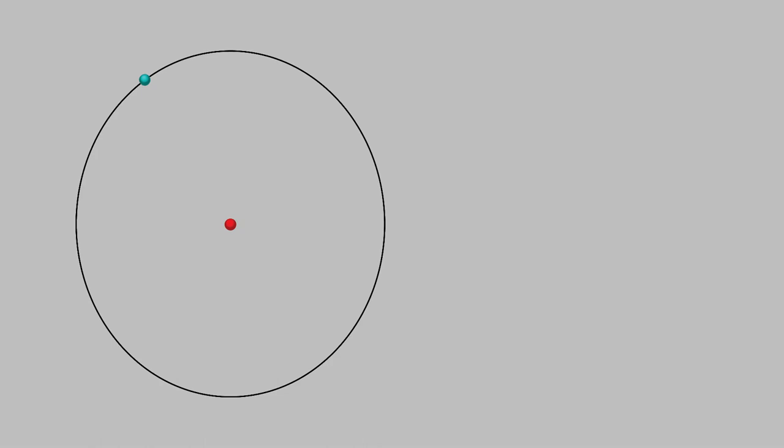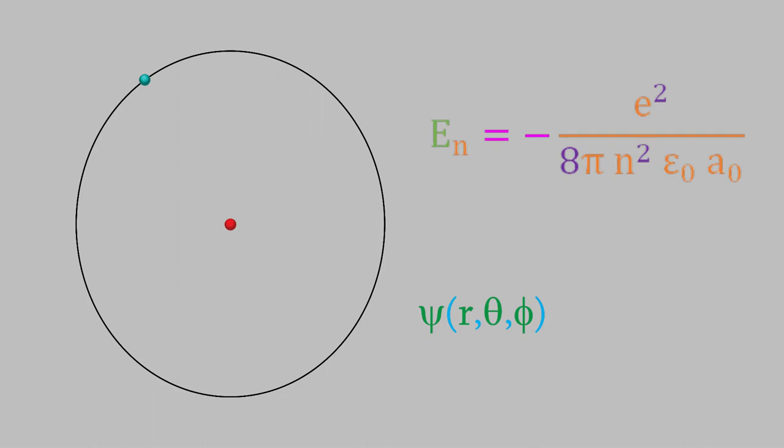We found that the energy of the hydrogen atom is given by this equation, and the wave function can be expressed as the product of two simpler wave functions: one that depends only on the distance from the nucleus, called the radial wave function, and another that depends only on direction relative to the nucleus, called the angular wave function. The symbol we use for the overall wave function has subscripts that tell us the values of the three integers n, l, and m used in the radial and angular wave functions.